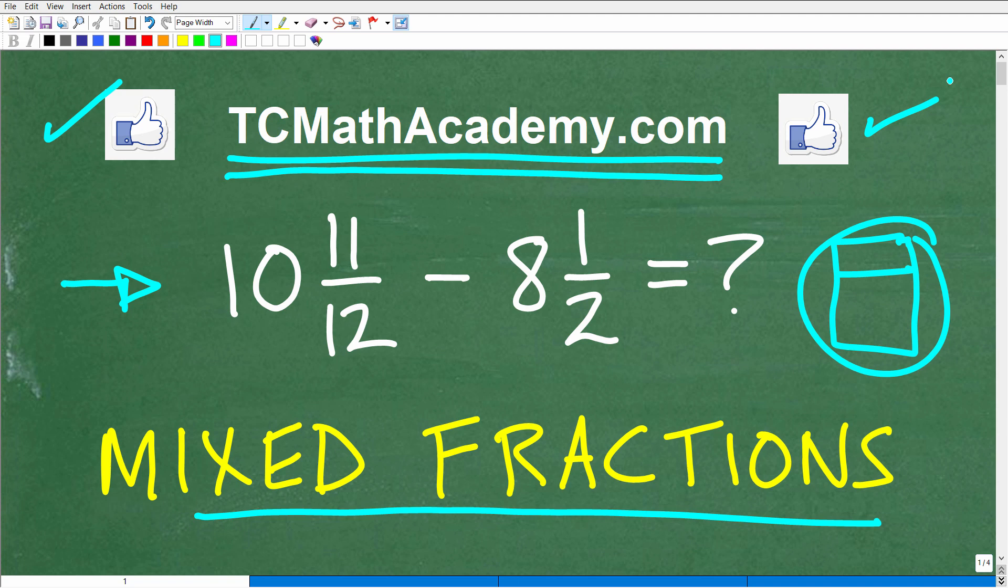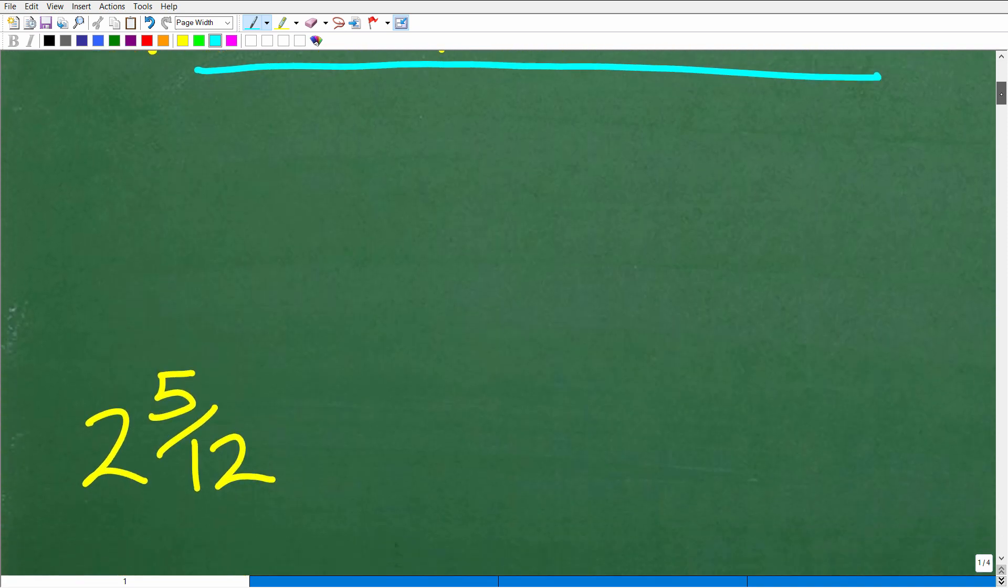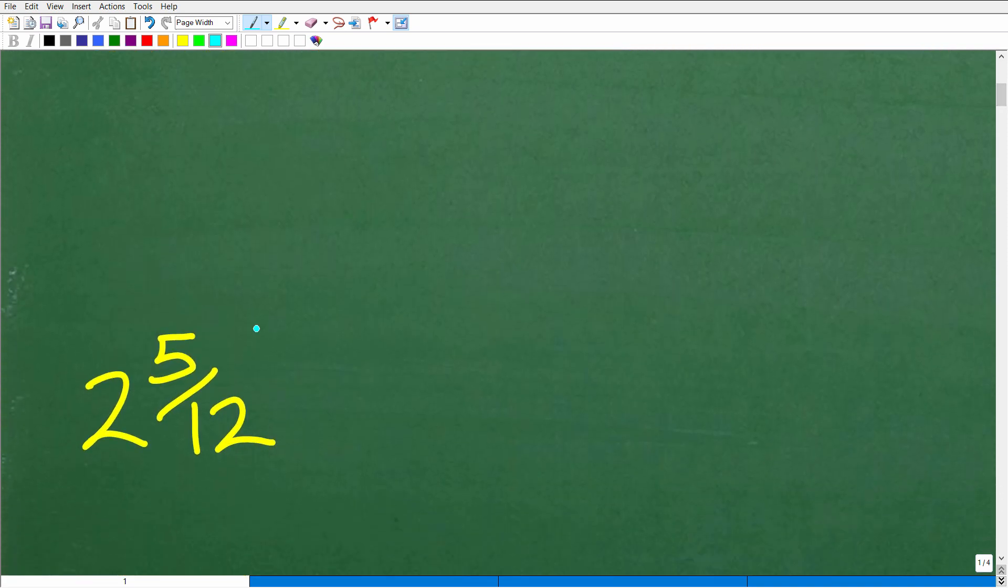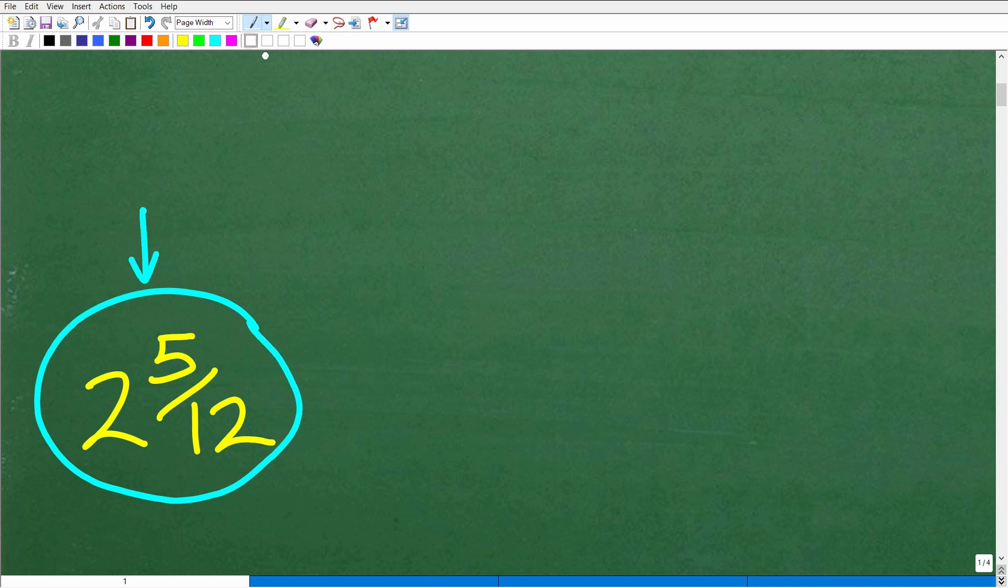Okay, so let's take a look at the answer here. 10 and 11 twelfths minus 8 and one half. What is the correct answer? Well, the correct answer is 2 and 5 twelfths. Notice that the answer itself is a mixed number.